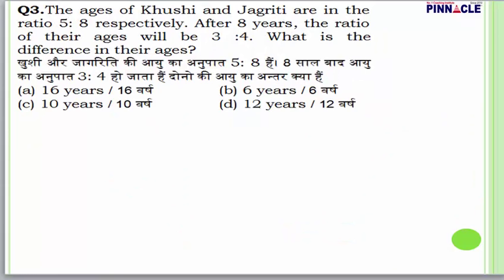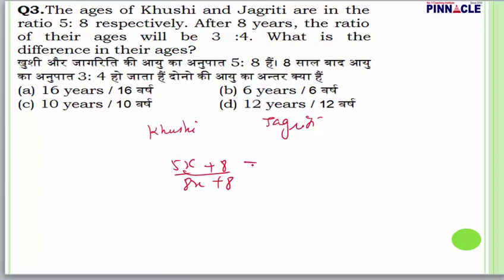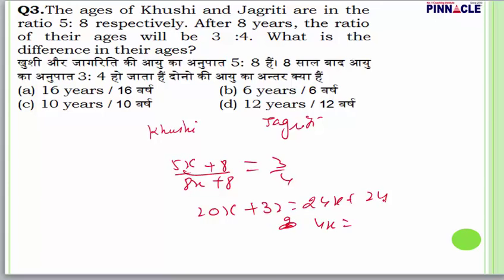Question number 3: The ages of Khusi and Zagrithi are in the ratio 5:8 respectively. After 8 years their ages become 3:4. What is the difference in their ages? Write 5x and 8x. After 8 years: (5x+8)/(8x+8) = 3/4. Cross multiplying: 20x+32 = 24x+24, giving x = 2. So Khusi's age is 10 years and Zagrithi's age is 16 years. Difference is 16 minus 10 = 6 years, answer is B.